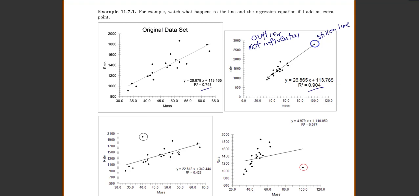But look what happens for this one when I put my point way over here. You can't tell as much on the scale, but my line moved up and kind of down. So my line changed. So look at my slope. I went from 26 to 22. My y-intercept went from 113 to 342. And R squared dropped a lot lower. So this one is an outlier because it's far away and it is also influential.